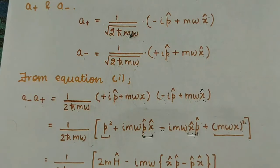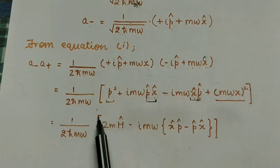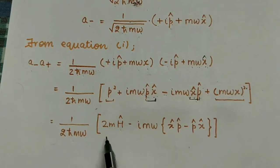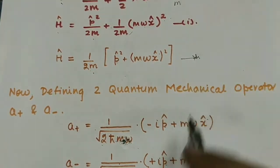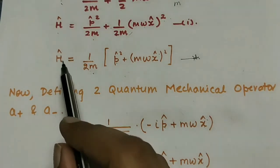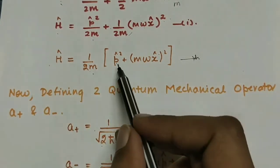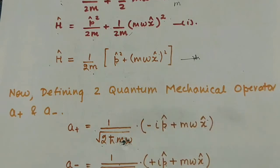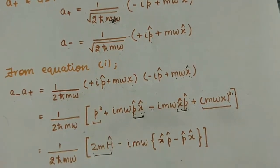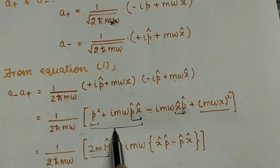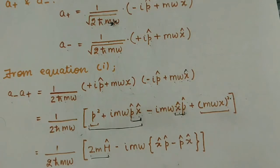The cross terms are the commutator of x and p. In the next step we have 1 over 2ħmω times 2mH — this term comes from our Hamiltonian equation — so 2m times H, and we are left with p² + (mωx)². If we find the value of 2mH, then 2m is multiplied here and we are left over with p² + (mωx)².